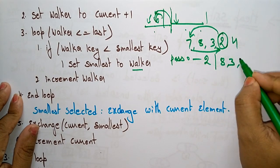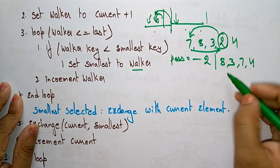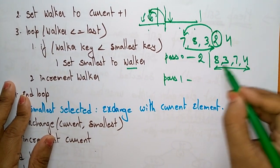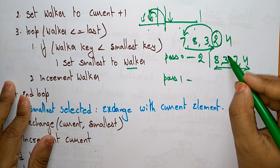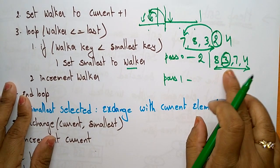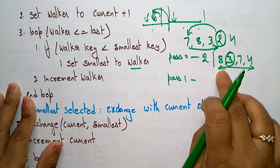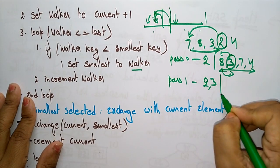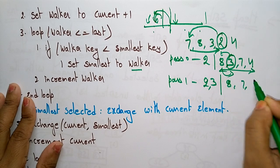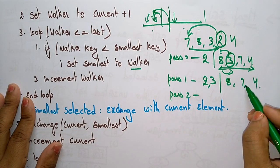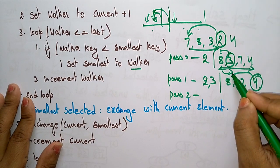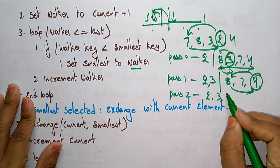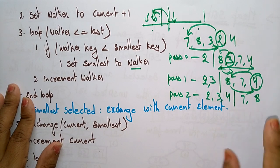So 2 comes to the front and 7 goes to the place of 2, giving: 2, 8, 3, 7, 4. Now concentrate on this unsorted list and increment to pass 1. Select the smallest element — 3 is the smallest. Exchange with the beginning of the unsorted list, which is 8. Now 3 comes here: 2, 3, 8, 7, 4.